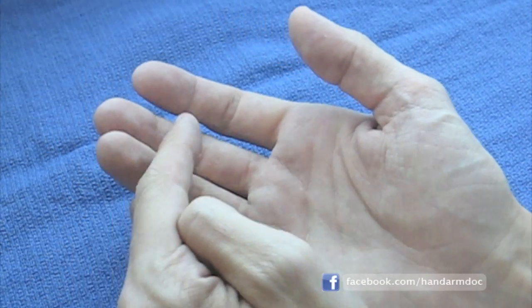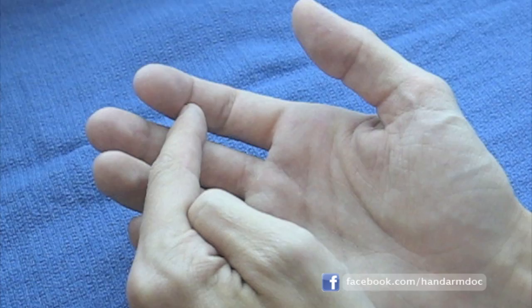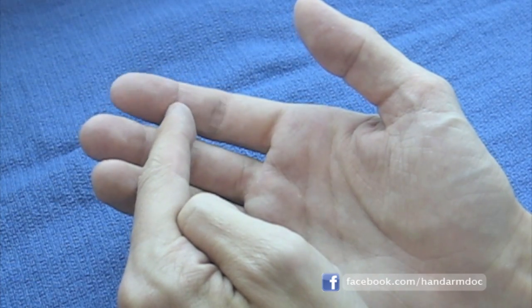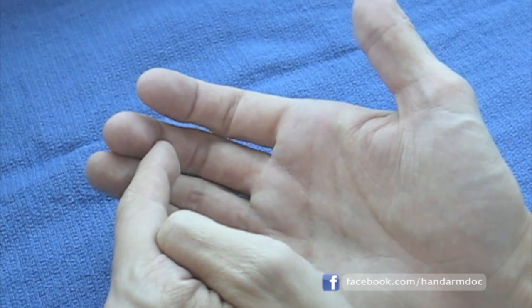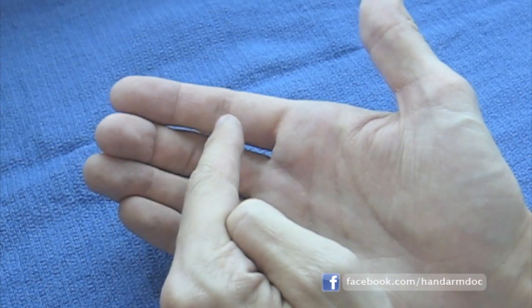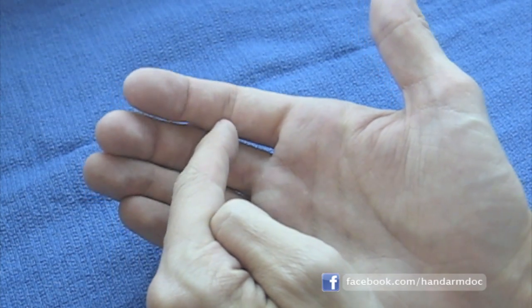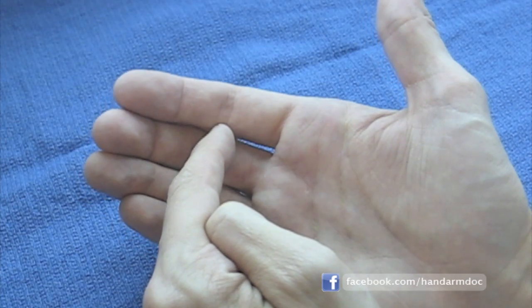The crease between the distal phalanx and middle phalanx segments is called the distal interphalangeal crease because it's the most distal of the finger creases out towards the tip. The next crease in line as you move from the fingernail towards the wrist is the proximal interphalangeal crease between the middle and proximal phalanx segments.